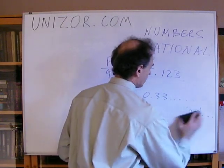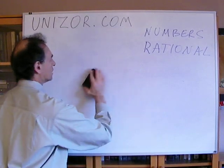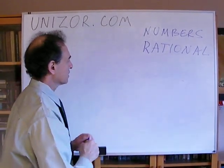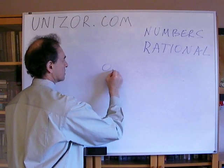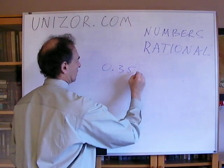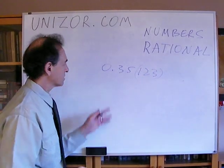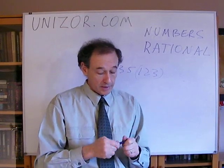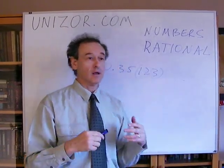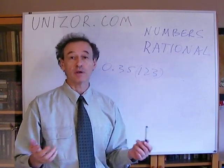As far as notation is concerned, mathematicians came up with a little bit more convenient if you wish, notation using the decimal system. They can have something like this, which basically means that 123 repeats infinite number of times. Well, it's a notation, right? I mean, it's a written representation of some abstract concept.